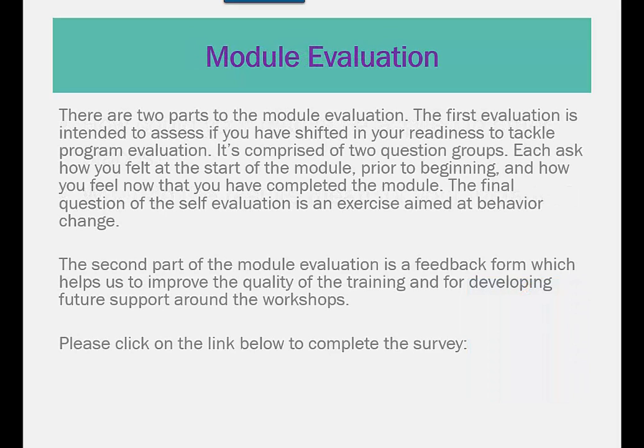What would a module about evaluation be without an evaluation of its own? There are two parts to the module evaluation. The first is intended to assess if you have shifted your readiness to tackle program evaluation, comprised of two question groups asking how you felt at the start of the module and how you feel now. The final question is an exercise aimed at behavior change. The second part is a feedback form to help improve training quality. Please click on the link below to complete the survey. Congratulations! You have completed this module.